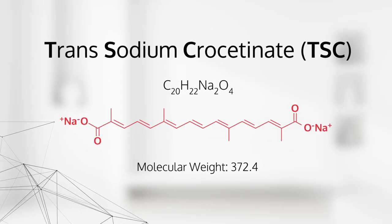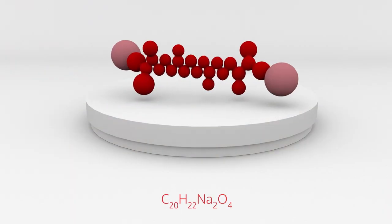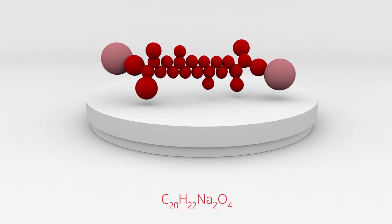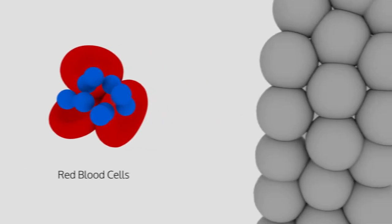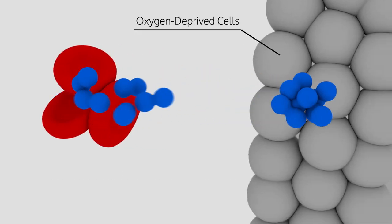Trans-sodium crocetinate, or TSC, is a long, rigid molecule designed to enhance oxygen diffusion through blood and tissue, through the lungs, onto red blood cells, and ultimately to the organs and tissues that are using oxygen for fuel.